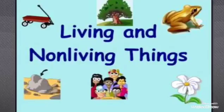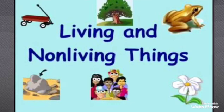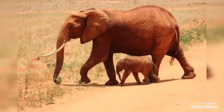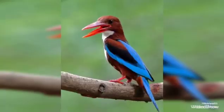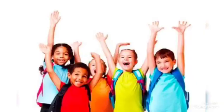We can see many things in our surroundings. Everything we see can be categorized into two groups: living and non-living things. All animals, birds, insects, plants, and human beings are living things.